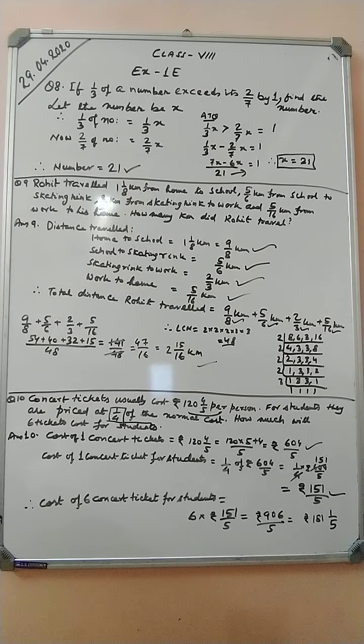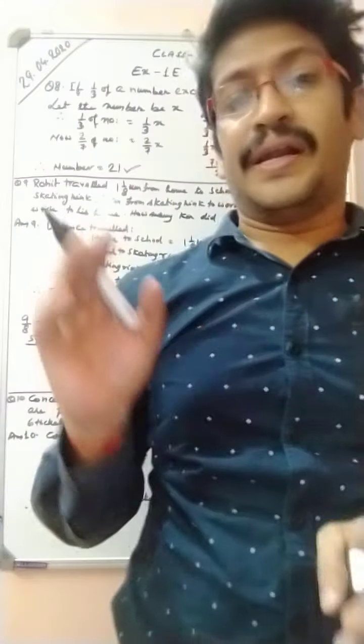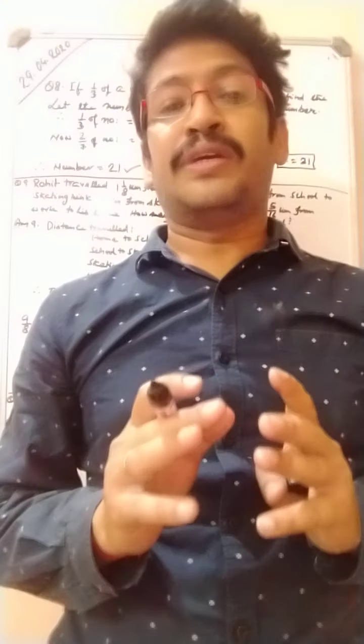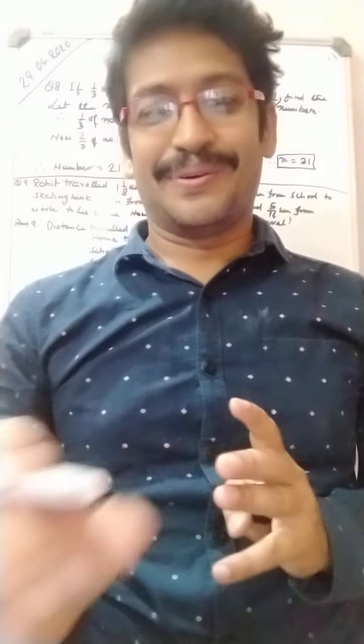Now, come to question number 9. Rohit travelled 1 and 1 by 8 km from home to school, 5 by 6 km from school to skating rink, 2 by 3 km from skating rink to work and 5 by 16 km from work to his home. How many km did Rohit travel? By seeing the question, we can easily understand that we have to add all the distances.